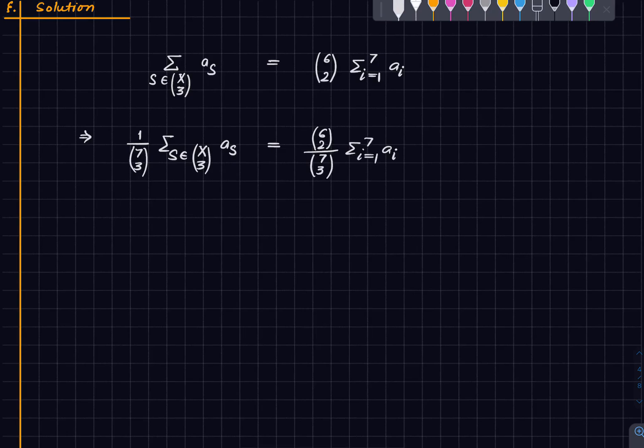And it's given to us that this is at least 6 choose 2 divided by 7 choose 3 into 332. So the sum of all the ages is at least 332 was already given.